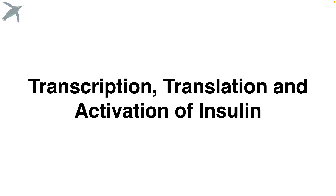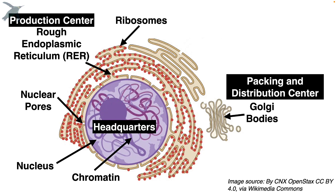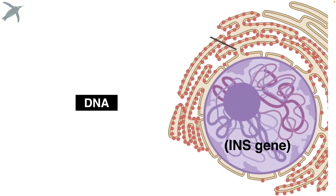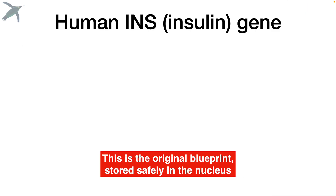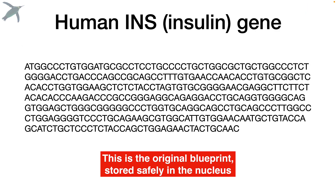Let's do it: transcription, translation, and activation of insulin. Here are the players in this story. I like to think about the nucleus as the headquarters. The rough ER and the ribosomes will be the production center. And the Golgi will be the packing and distribution center. Transcription goes from DNA to messenger RNA. Specifically, we are looking at the INS gene — INS for insulin — in humans on chromosome 11. This is the original blueprint, the gene, kept safely in the nucleus.